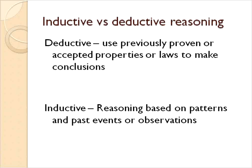Inductive and deductive reasoning. Deductive reasoning is when you use previously proven or accepted properties or laws to make a conclusion. An example of that would be a proof that you do in geometry, when each step uses a property or a law in mathematics that is true, and those steps prove the statement that you've made. That would be a deductive argument, because each step is proven.